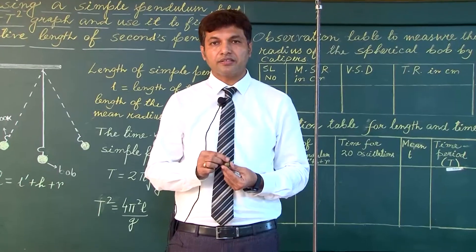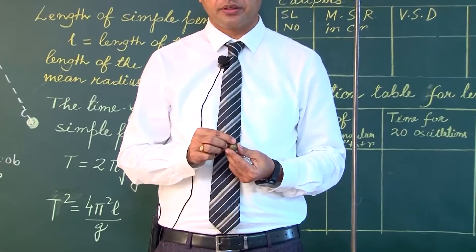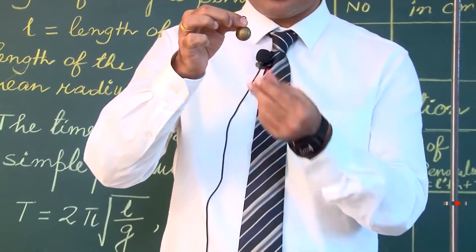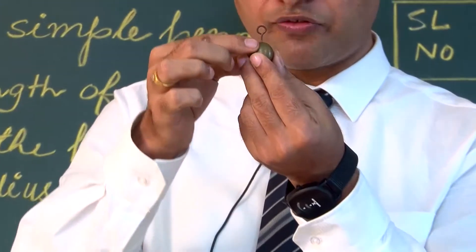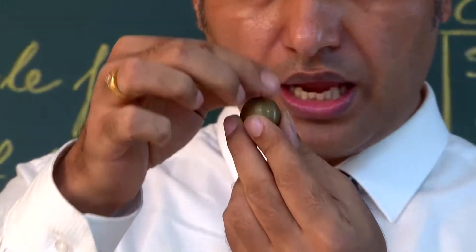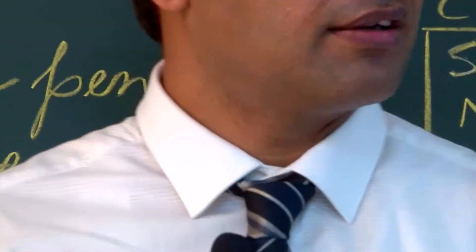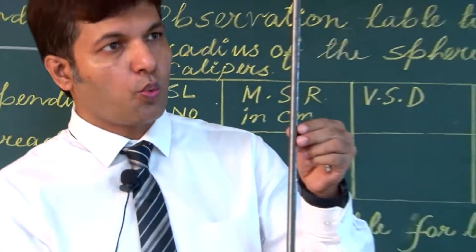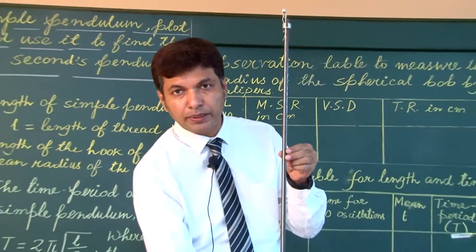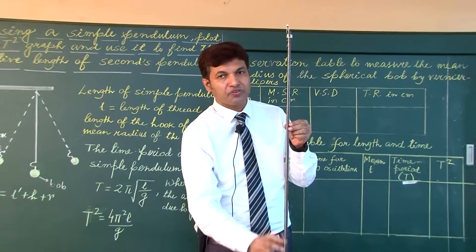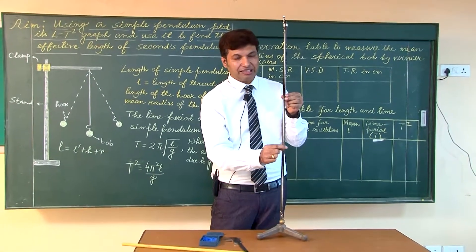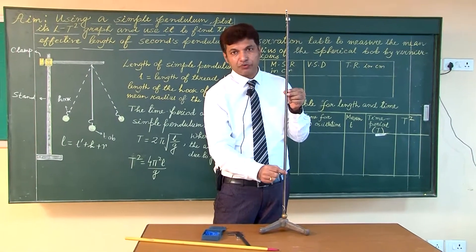The apparatus required to perform the experiment is a simple pendulum. You can see a spherical bob with a hook, and a stand where we can hang the pendulum with the help of a thread and vary the length of this thread.